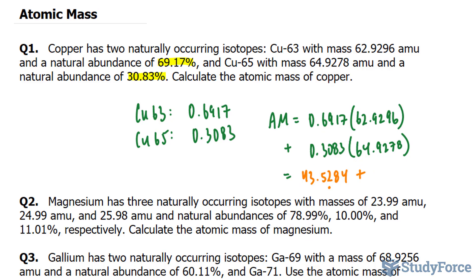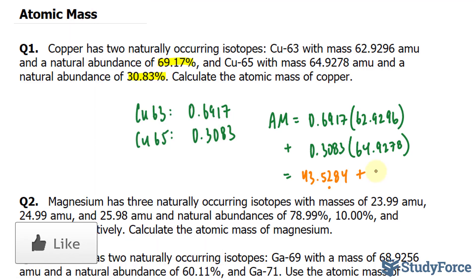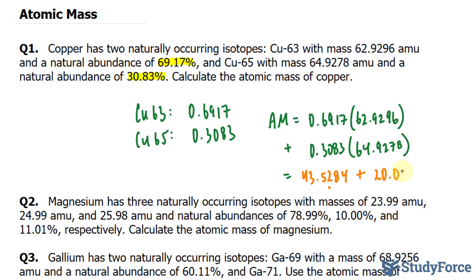Plus, I'll do this calculation next: 0.3083 times 64.9278. Once again, everything after that position is insignificant, but I'll continue to write up until four decimal places for good measure: 20.0172. Now technically you're supposed to write the whole number down, but by stopping after four decimal places, that's good enough.